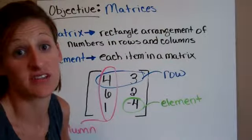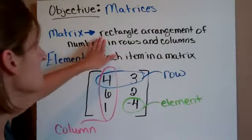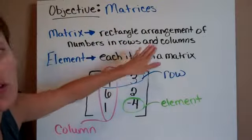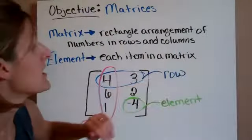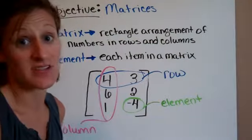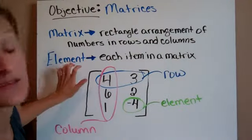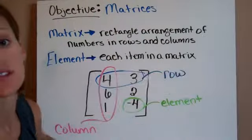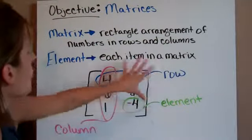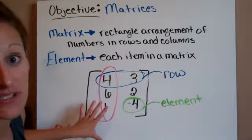Let's look at what a matrix is. A matrix is going to be a rectangle arrangement of numbers in rows and columns. Written in black, this is a matrix.